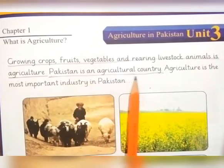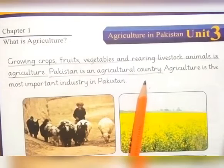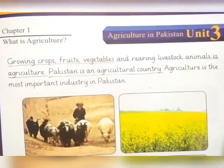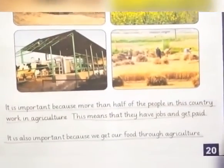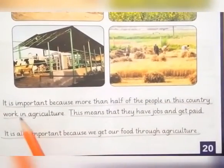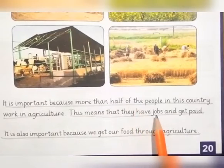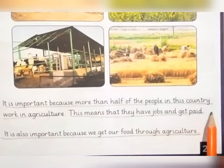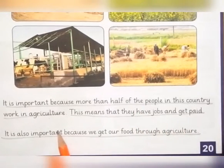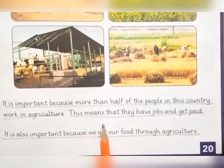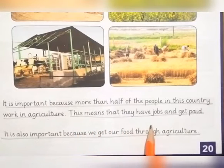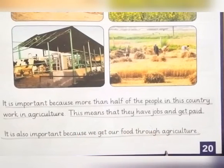Agriculture is the most important industry in Pakistan. It is important because more than half of the people in this country work in agriculture. This means that they have jobs and get paid.